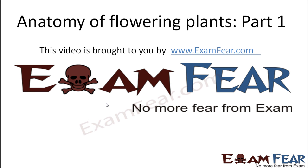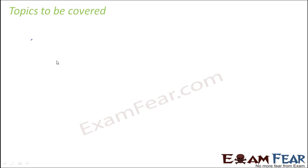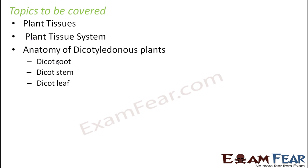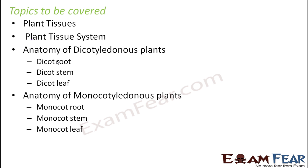Hello friends, this video on anatomy of flowering plants part 1 is brought to you by examfear.com — no more fear from exam. Topics to be covered in this lesson are plant tissues, plant tissue system, anatomy of dicotyledonous plants wherein we will talk about dicot root, dicot stem and dicot leaf, anatomy of monocotyledonous plants wherein we will talk about monocot root, monocot stem and monocot leaf, and secondary growth.